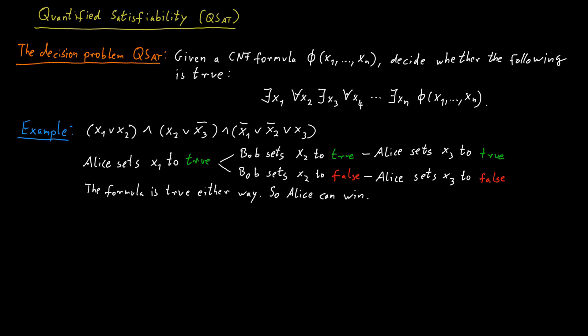So this was a specific example. In general, it's quite difficult to describe these strategies, in particular if you have many more than just three variables. But for this particular example, we could actually describe what Alice's strategy would be to win this particular game. So this would be a yes instance for quantified satisfiability.